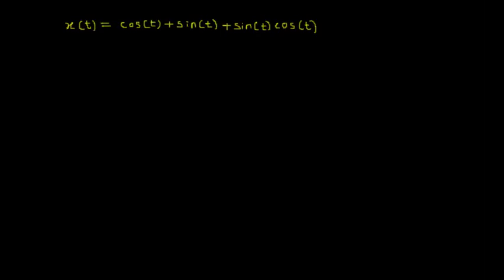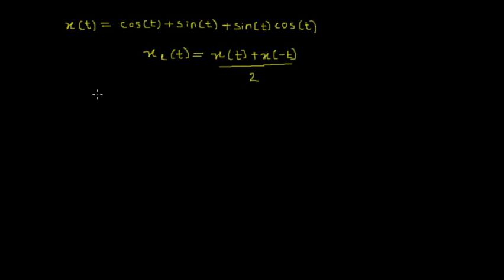Welcome to the video lecture on even and odd signals. In this video we will consider an example wherein the given signal x(t) is equal to cosine(t) plus sine(t) plus sine(t) times cosine(t). The first task is to find the even part of the signal. I represent the even part of the signal as xe(t), which is equal to x(t) plus x(-t), all divided by 2.